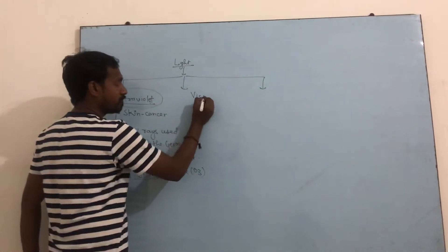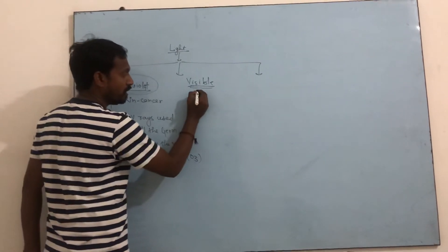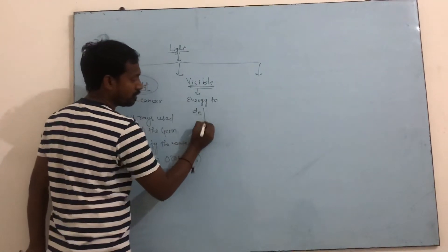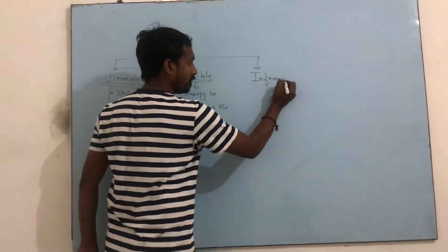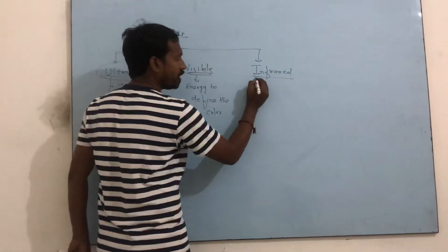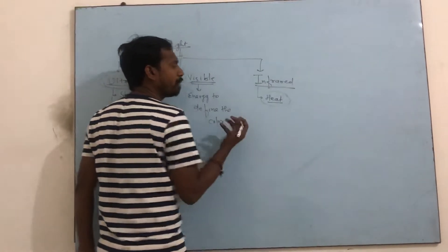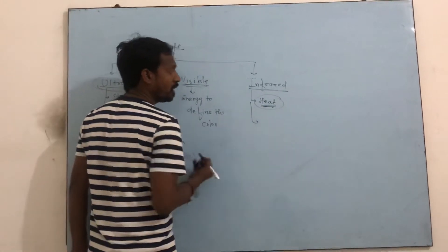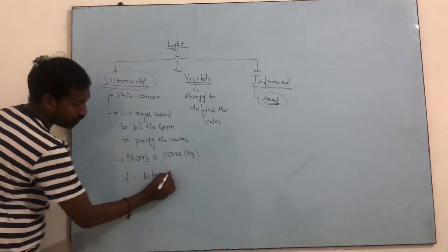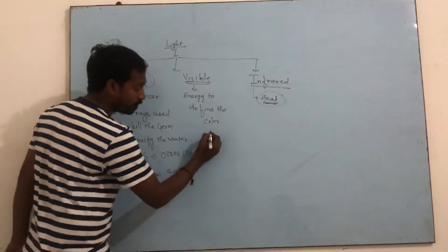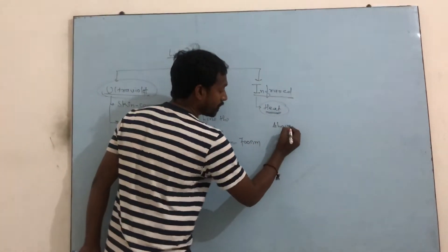The second type is visible light, which gives us the sensation of sight and energy, and is used to divide color. The third one is infrared light. Infrared light has wavelengths between 400 nanometers to 700 nanometers and above 700 nanometers.